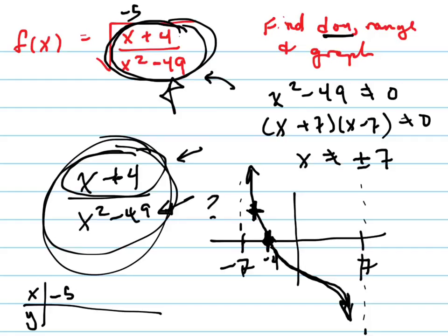So now my question is, what's happening to the left of negative 7? Again, plug in another value. Let's plug in negative 8. What happens when I plug in negative 8? Up on the top, it's going to be negative 4, and on the bottom, negative 8 squared is positive 64. 64 minus 49 is a positive number. What's a negative divided by a positive? It's a negative. So what's the value down here? It's probably doing something like that.